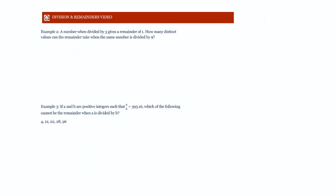So if the divisor is n, the remainder varies from 0 to n minus 1. Now another example: a number when divided by 3 gives a remainder of 1. So we have n marbles divided into groups of 3 each, and after making as many groups as possible, 1 marble is left over.